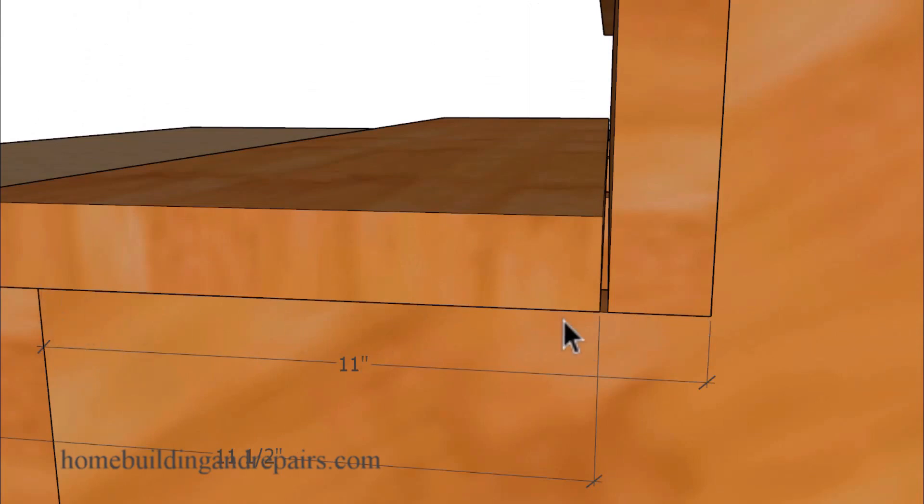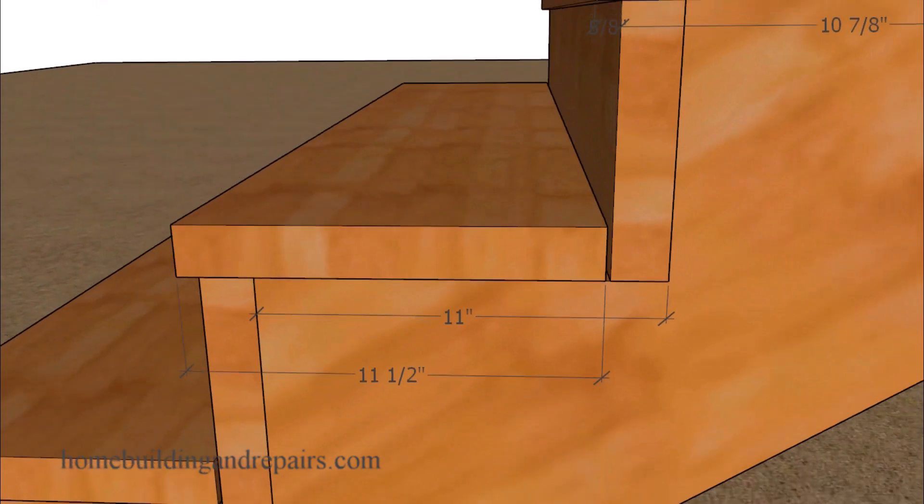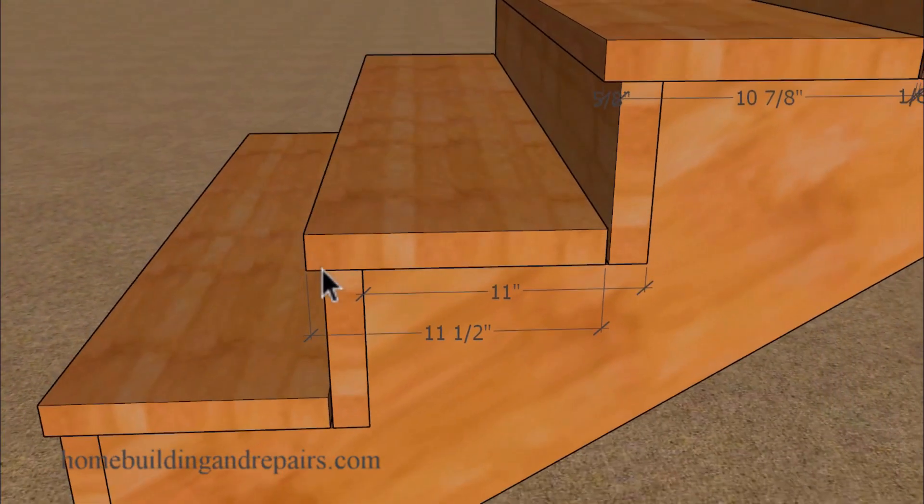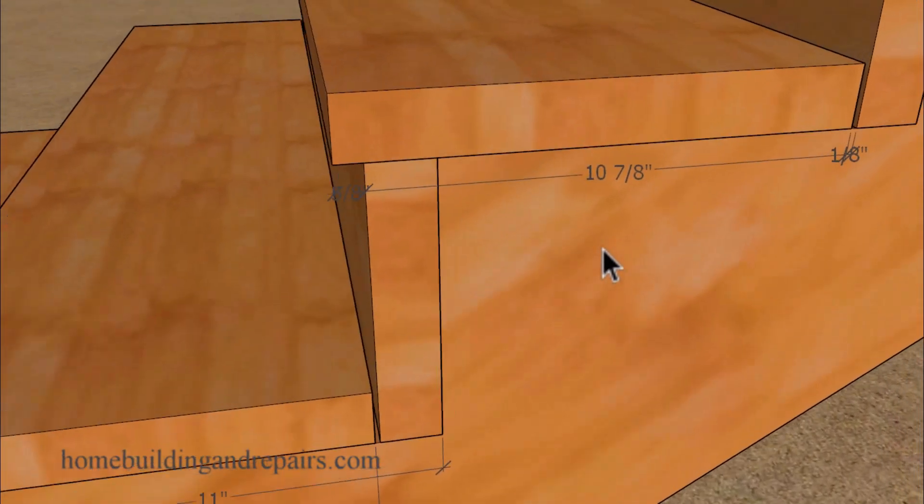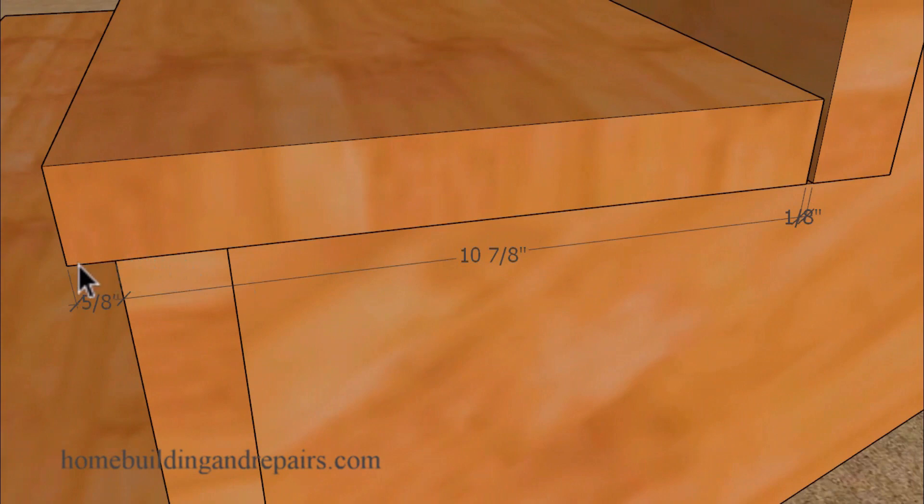And you can see here where the tread depth for the stringer in this example is 11 inches, and that's going to provide us with a 5/8-inch overhang. And you can see that better over here. Let's zoom in where we have a 5/8-inch overhang, 10 7/8 inches over here with a 1/8-inch gap.